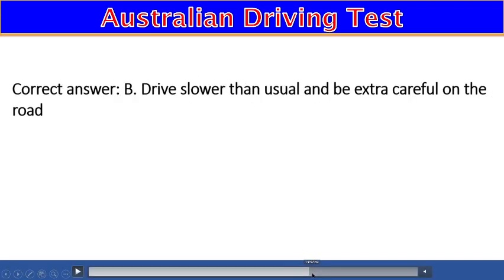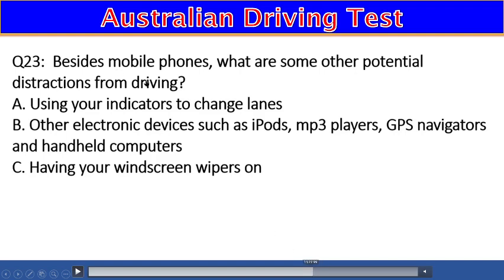Question 23: Besides the mobile phone, what are some other potential distractions from driving? A) Using your indicator to change lanes, B) Other electronic devices such as an iPod, MP3 player, GPS navigator, and handheld computer, C) Having your windscreen wipers on. The right answer is B — other electronic devices.